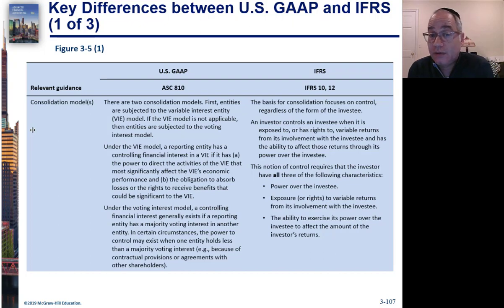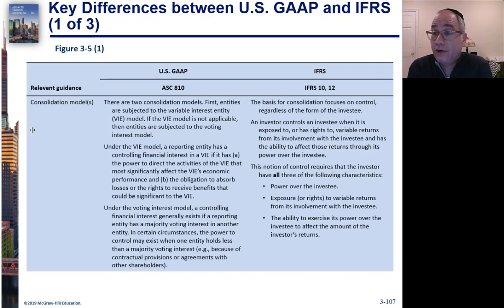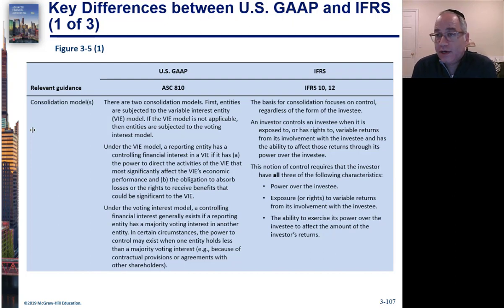The first thing you would do under US GAAP is check to see if there is a VIE. If there is not a VIE, then you would go directly to the Voting Interest model, which is what we have been talking about. That Voting Interest would exist if you have more than half of the voting shares.